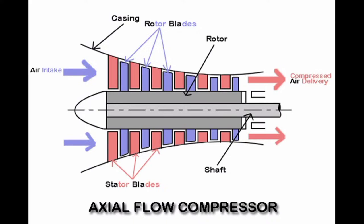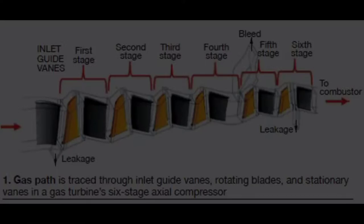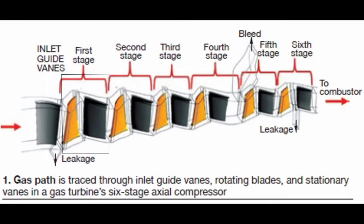This compressor consists of a rotor and a stator. A collection of one rotor row and one stator row is called a stage.